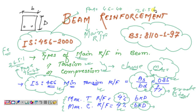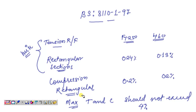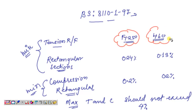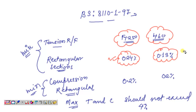Now let's look at BS 8110 Part 1, 1997. For tension reinforcement and compression reinforcement, there are specific clauses. For BS 8110 Part 1, 1997, the tension reinforcement in a rectangular section depends on the grade of steel fy. For fy = 250, the minimum tension reinforcement is 0.24%, and for fy = 460, the minimum tension reinforcement is 0.13%. These are the minimum tension reinforcement criteria.